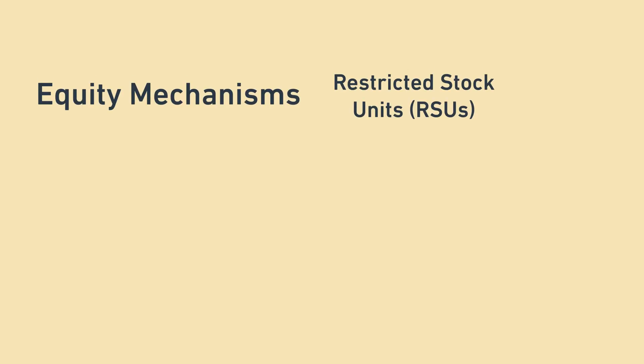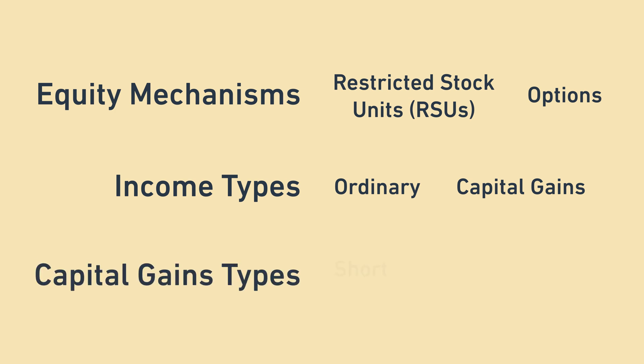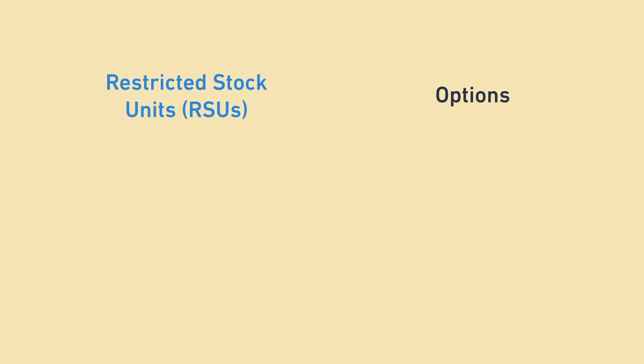That's all for now. We covered the most common two kinds of equity compensation mechanisms — RSUs and options — the two kinds of income that they generally incur for taxes — ordinary and capital gains — and the two kinds of capital gains — short and long. In part two, we'll go over how RSUs are taxed, and in part three, we'll cover options. See you there!